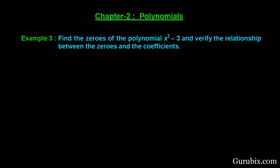Welcome friends. In this video we shall solve example number 3 of chapter 2 of class 10. The example is as follows: find the zeros of the polynomial x squared minus 3, and verify the relationship between zeros and the coefficients. So let us see how to solve this example.